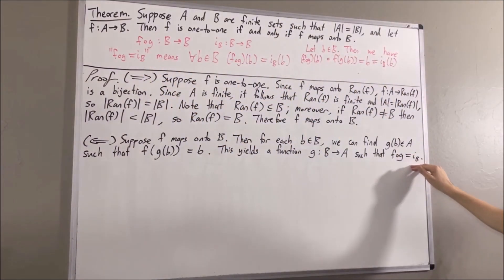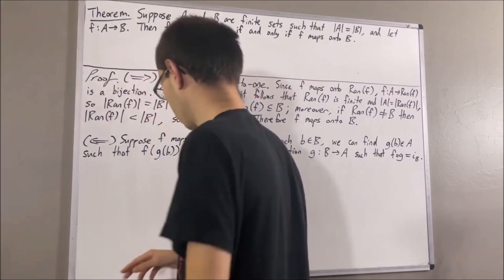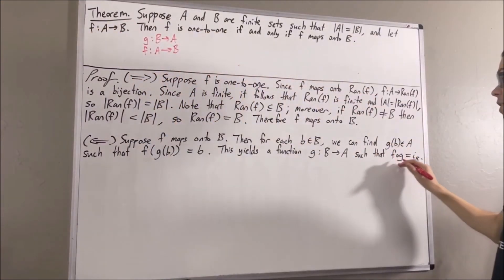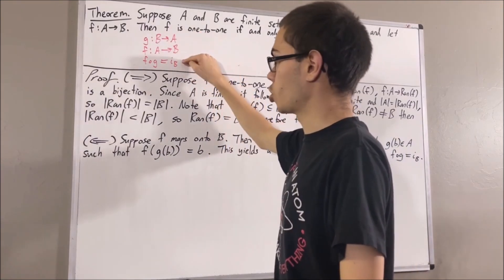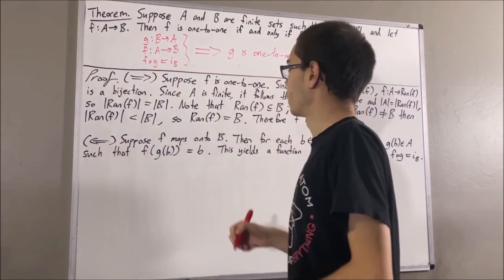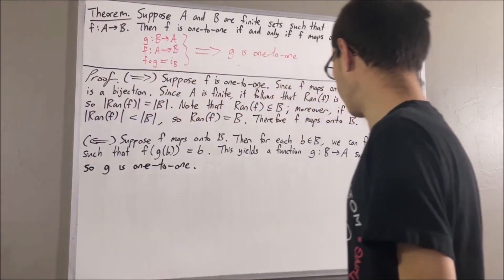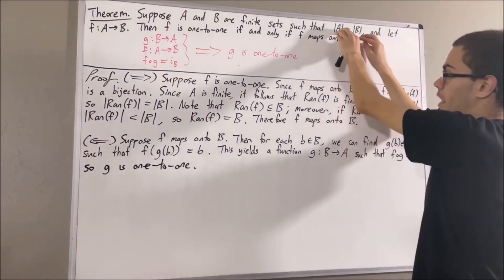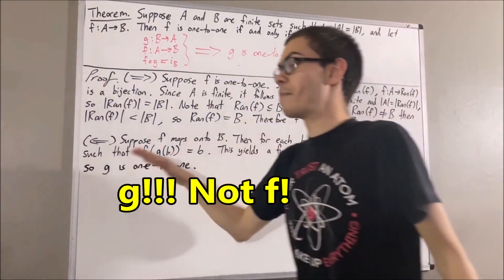Now, we know that G is a function from B to A, F is a function from A to B, and F∘G equals the identity map on B. It turns out that no matter what A, B, F, and G are, if these three things are true, then G is one-to-one. I'll leave a video in the description which proves this property. Now notice G is a function from a finite set to a finite set, and these finite sets have equal cardinality. So we can apply the same argument as before to show that G maps onto A.